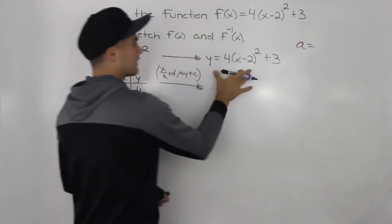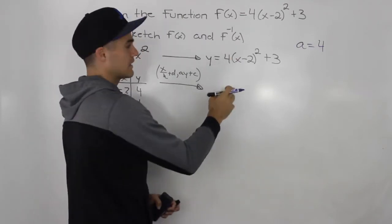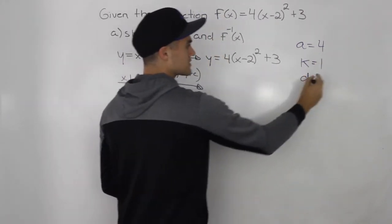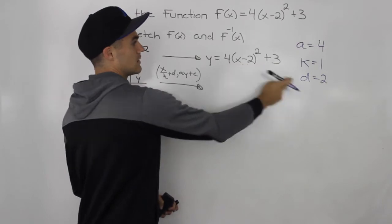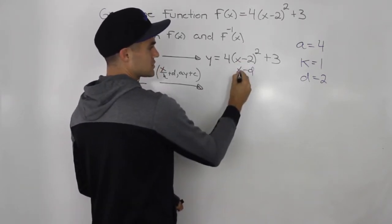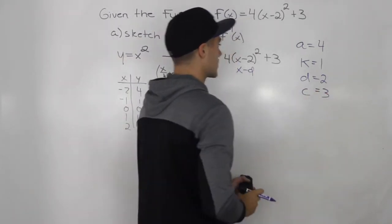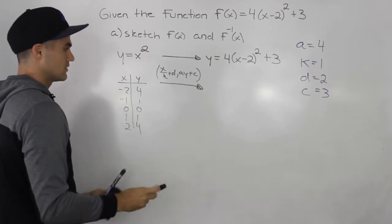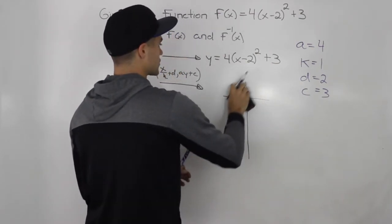Looking at this function, we can tell the a value is 4. There's nothing in front of x, so the k value is 1. The d value is positive 2 — remember, you always take the opposite sign, so since it's x minus 2 and the general formula is x minus d, d equals 2. Then the c value is 3. Now that we have those transformation values, we can create a table for the transformed function.